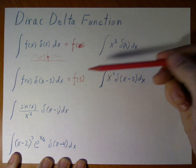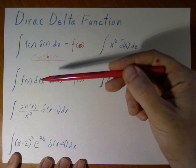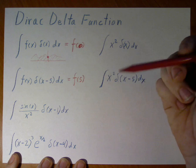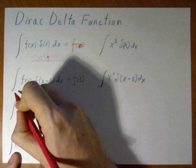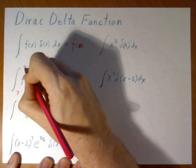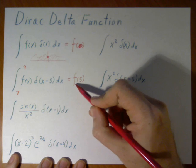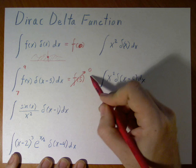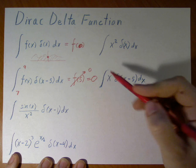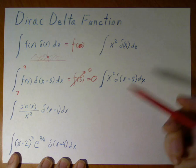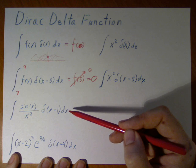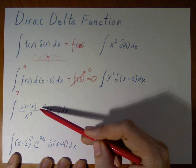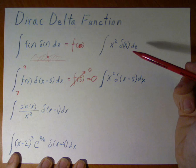If, however, our limits are outside of where the Dirac delta function is, such as 7 to 9, then this becomes 0. Likewise, we can take more complicated examples.